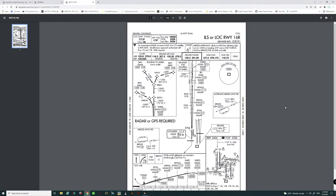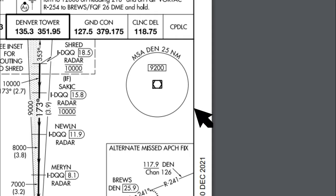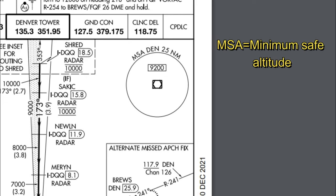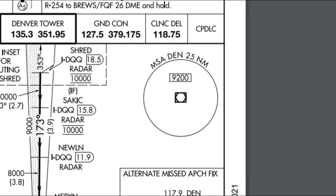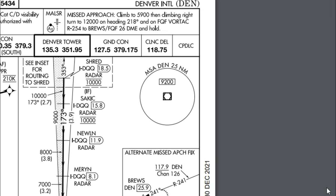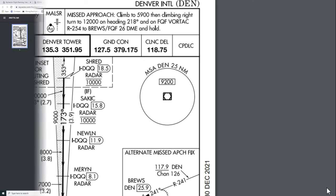Up at the top right we see something that says MSA Denver 25 nautical miles. The MSA is your minimum safe altitude in the area around the Denver VOR. The minimum safe altitude shown in the box is 9,200 feet, meaning anywhere within 25 nautical miles of the Denver VOR, 9,200 feet is your minimum safe altitude to fly.